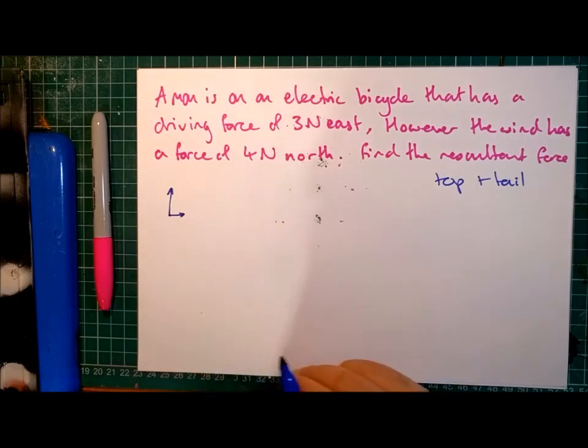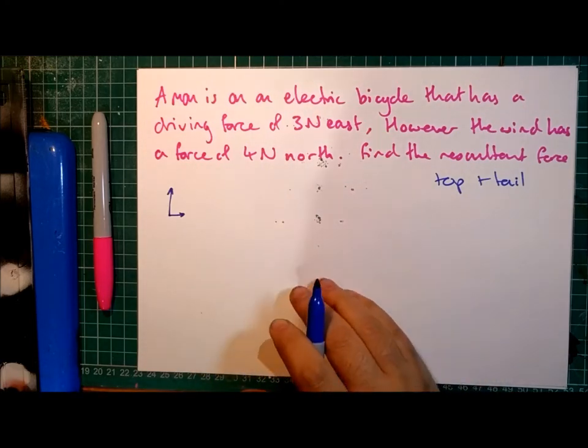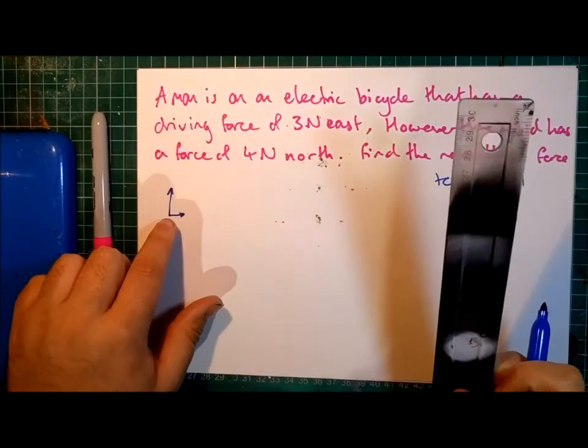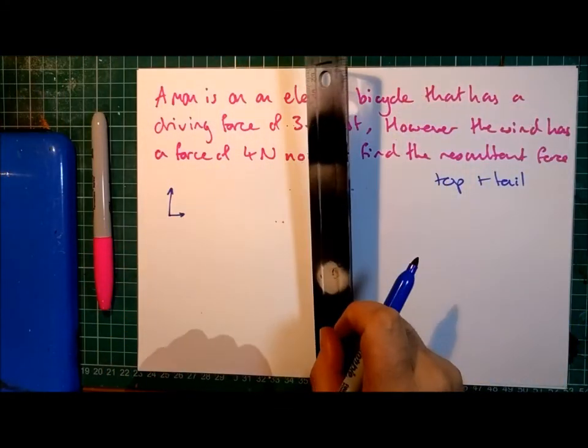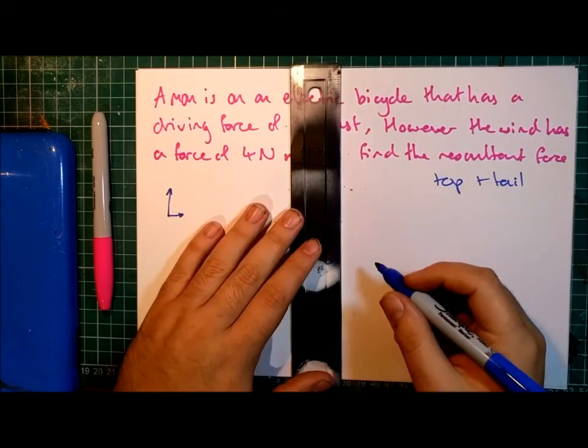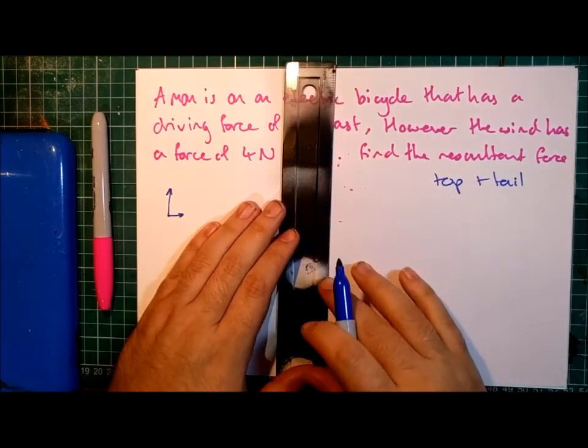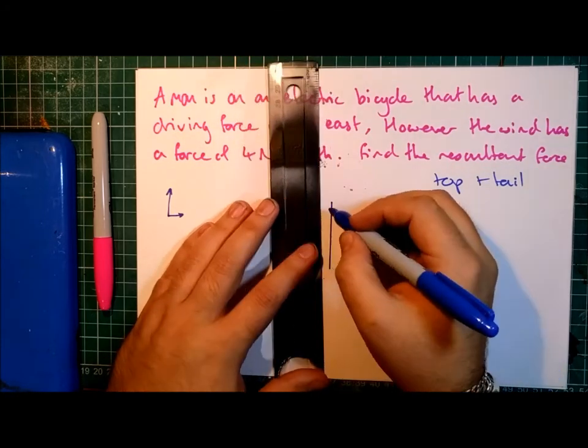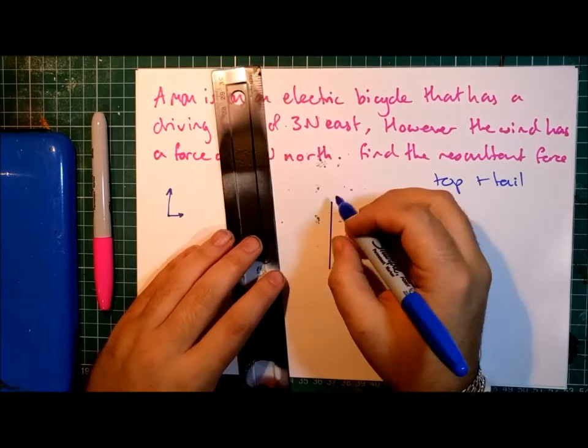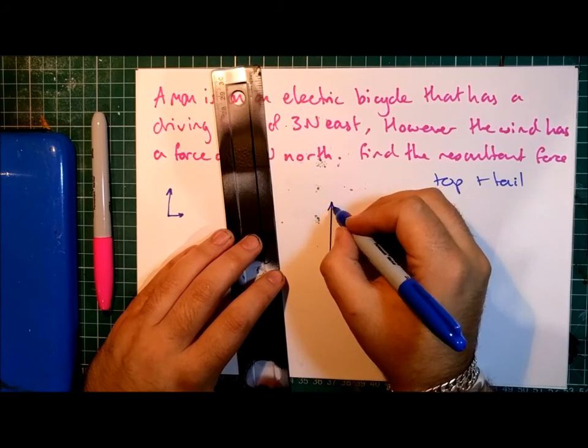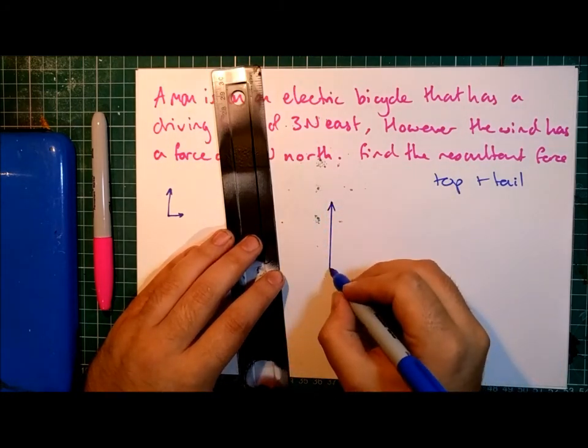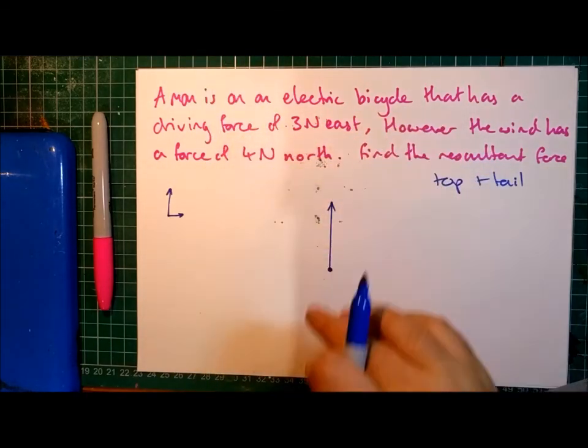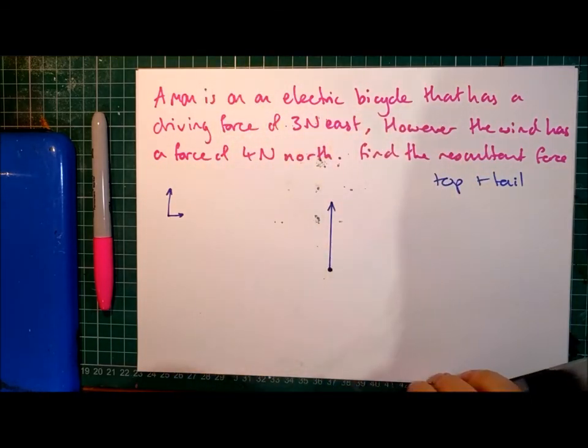You have to make sure you draw the arrows the correct length, and you have to make sure that you don't rotate the arrows. I'm going to start with our wind of 4 Newtons north. I would draw, carefully reading off the side of my ruler, I would draw a 4 centimetre line straight up to represent the 4 Newtons magnitude of this force. And down here, that's our starting point, or rather, that is our man on the electric bicycle.